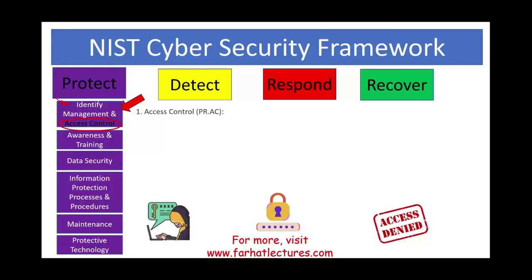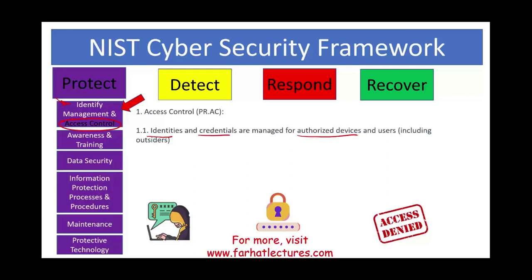The category here is access control — basically protecting the system. That access could be logical, physical, or remote. Identities and credentials are managed for authorized devices and users, including outsiders. This is why identity management was added. We want to know exactly who has access to what, who is authorized to do what, including outside parties. If you want to protect your system, you need to hold people accountable, and to do that, you need to define who can access the system, who is authorized, and who has credentials.